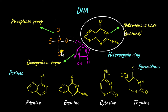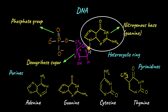Before we learn how a DNA macromolecule is formed, let's understand the numbering of the carbons in the deoxyribose sugar. From the right, the carbons are numbered 1', 2', 3', 4', and 5'.